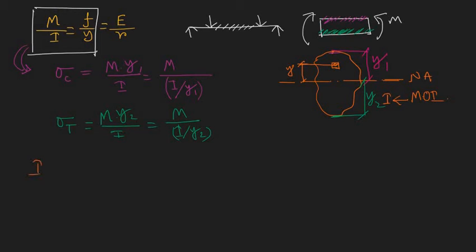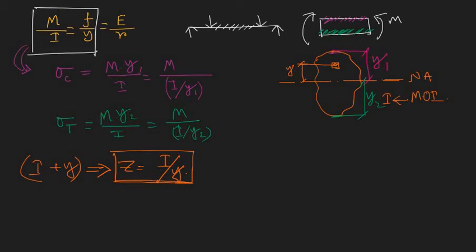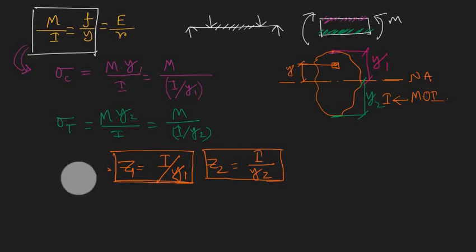Now let's replace the term I/y with a single quantity Z, where Z = I/y. So Z1 = I/y1 and Z2 = I/y2. Instead of using two parameters, we use a single parameter Z, which is nothing but our section modulus.